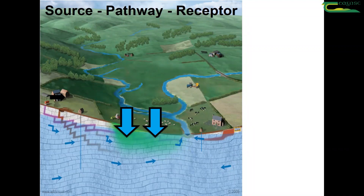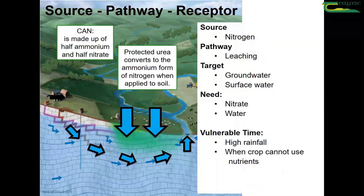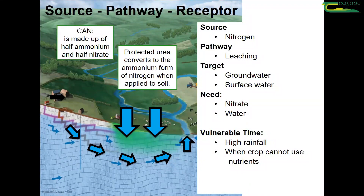Here's an agricultural landscape. The two blue arrows in the middle are indicating the leaching pathway, so it's a vertical pathway through the ground surface. The source here is nitrogen, and the pathway is the leaching pathway where nutrients are lost through the soil and head towards groundwater.